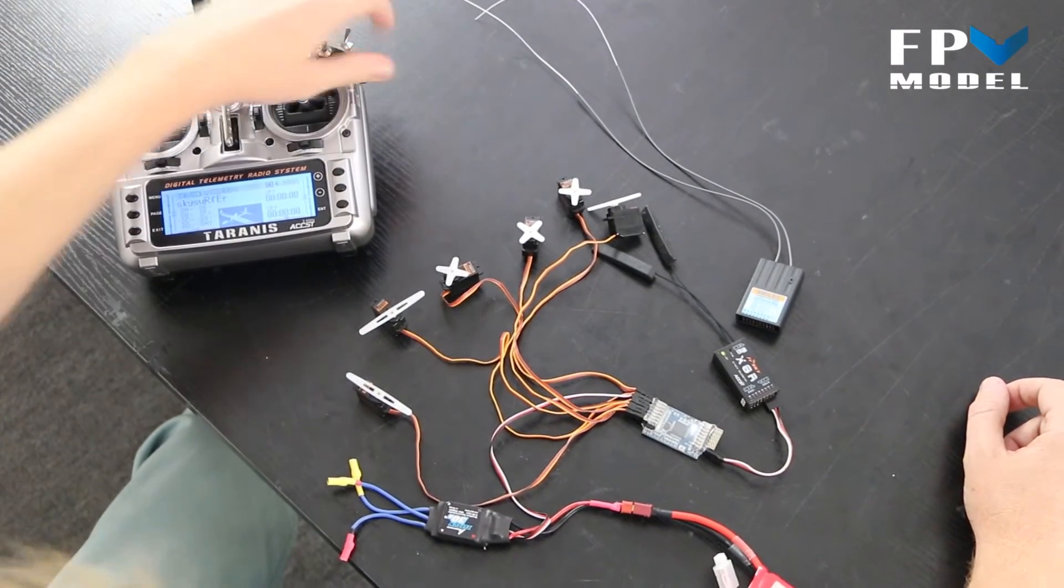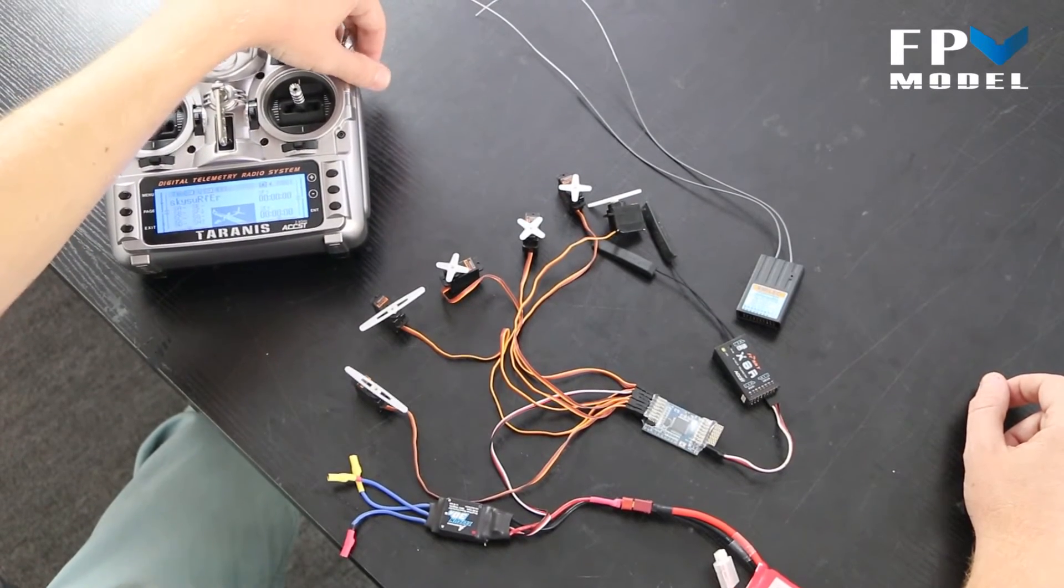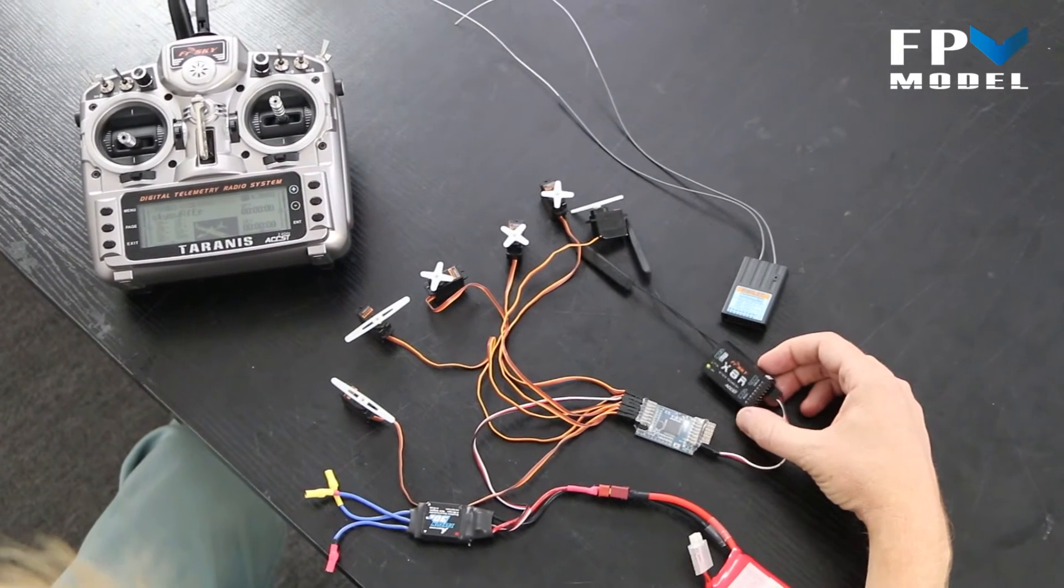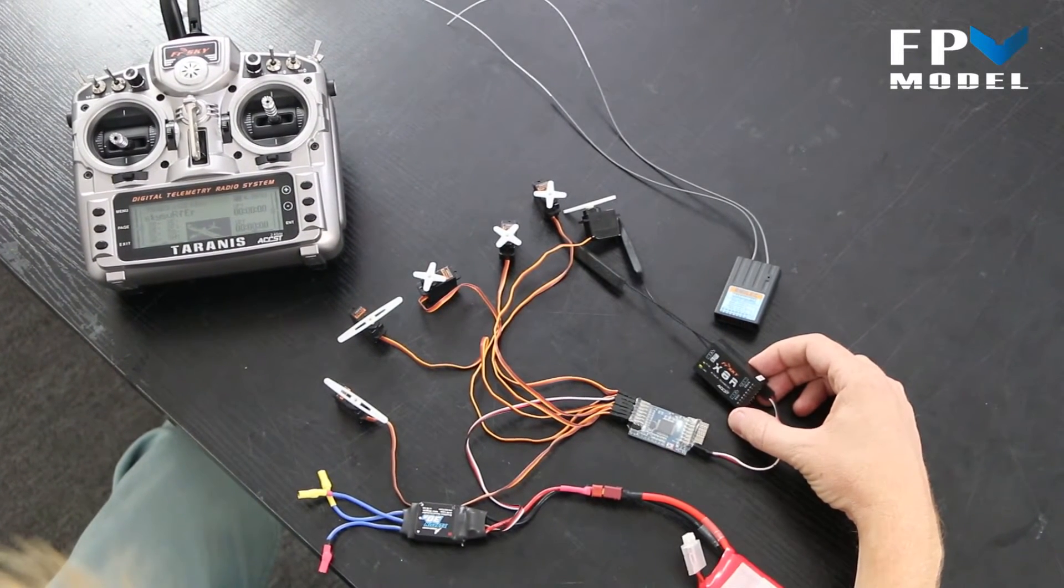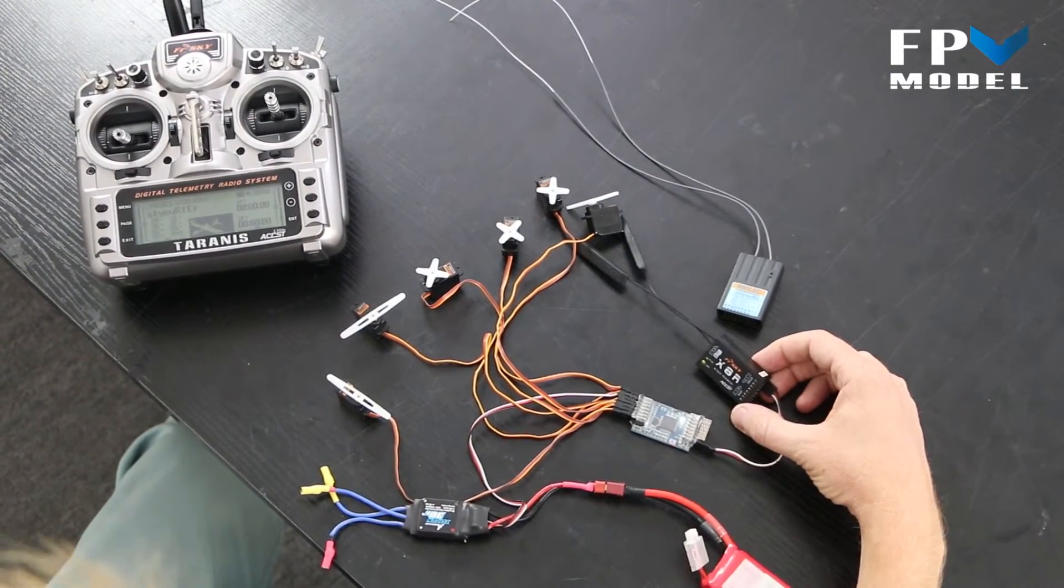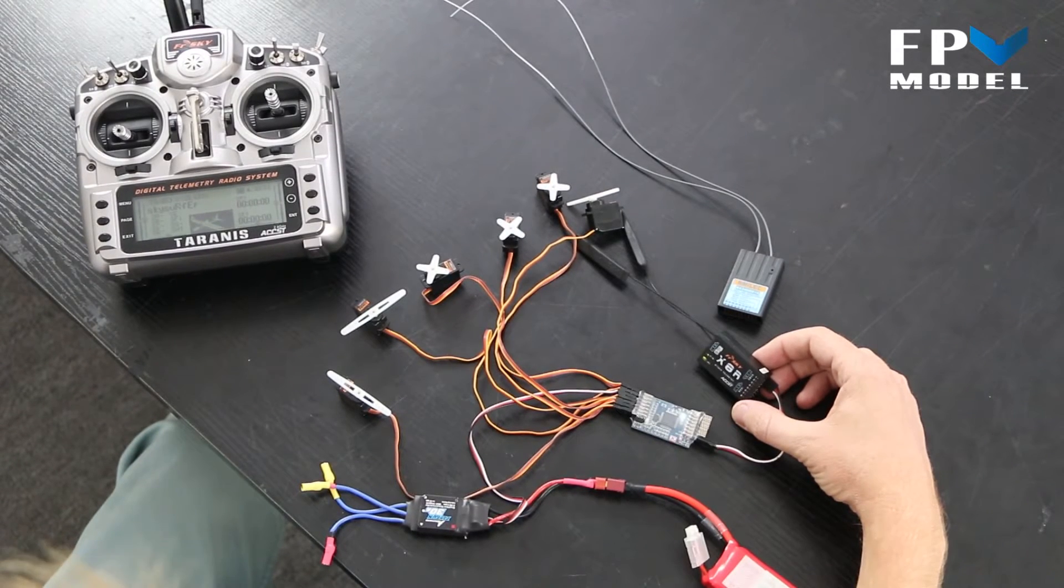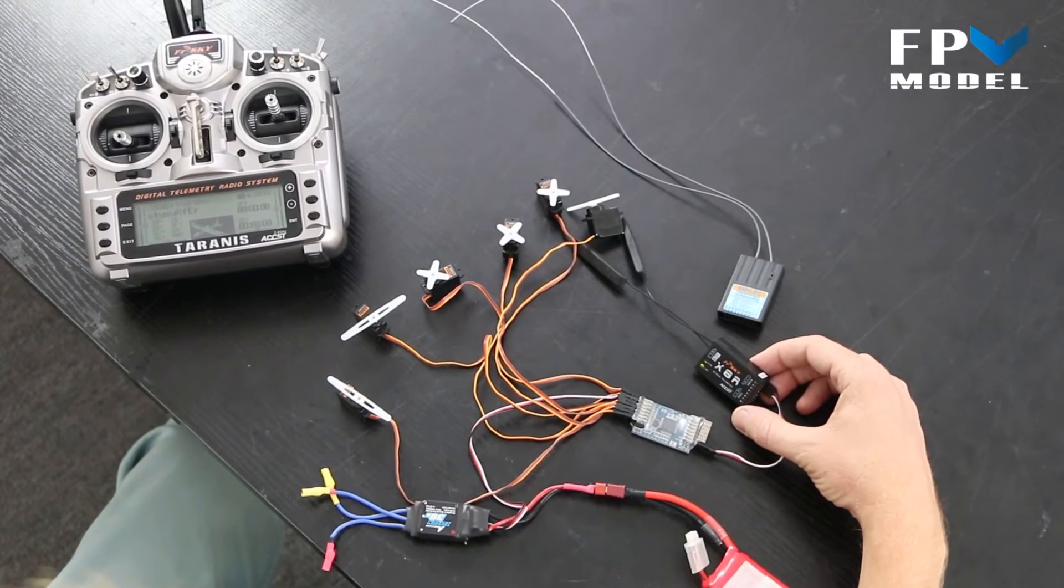So this is just another option of things you can do. One thing about a lot of these receivers is people find themselves trying to do the eight channel crunch where they're trying to figure out everything they want to put on their plane or their multi rotor and they've only got eight channels to do it with.